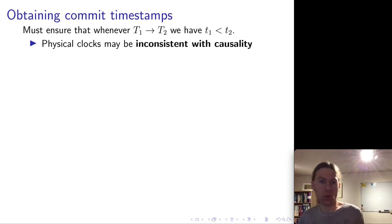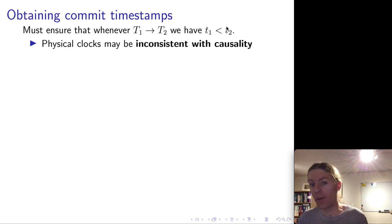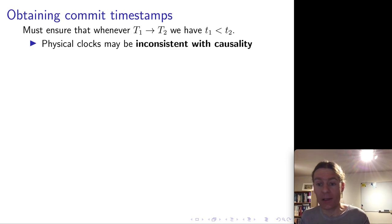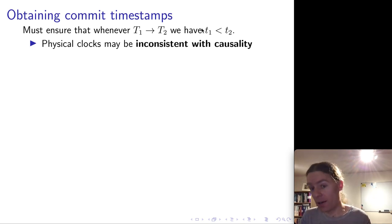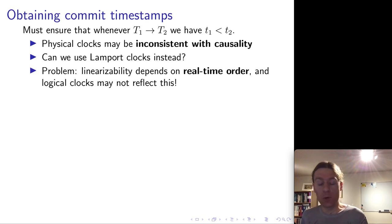What is interesting about Spanner's implementation is how these timestamps are generated. To ensure causal consistency, if transaction T1 happened before T2, then the timestamp of T1 must be less than the timestamp of T2 — that's what the ordering property in MVCC relies on. Recall from the lecture on physical clocks that physical clocks do not actually guarantee this. With physical clocks, you could end up with T1 happening before T2 but T2 having a lower timestamp than T1, which we don't want.